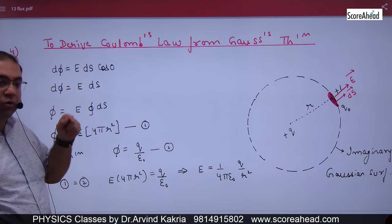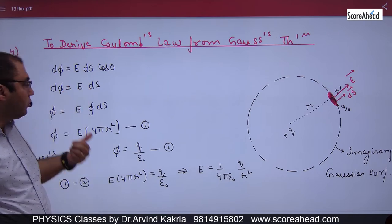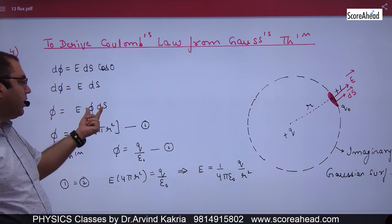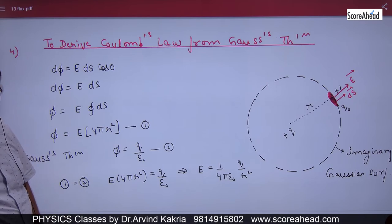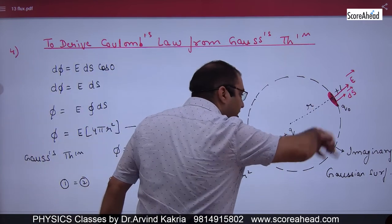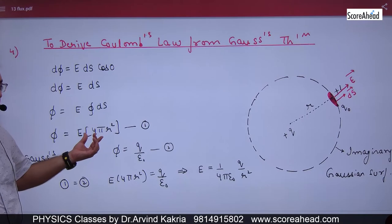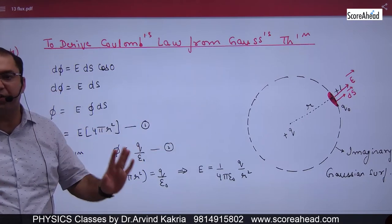So the value of small flux and total flux integration: total flux phi is equal to E into integration of ds. Now what is the integration of ds? 4π r square. So what did you get? The flux.